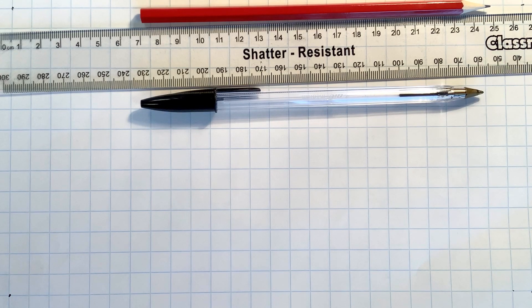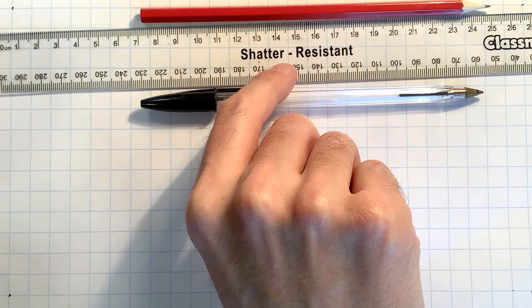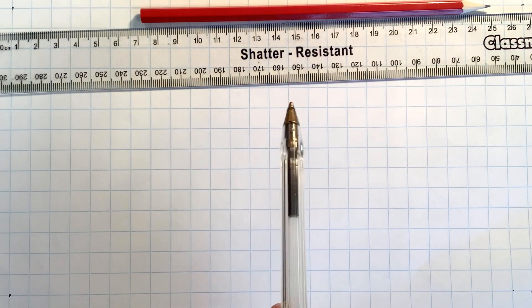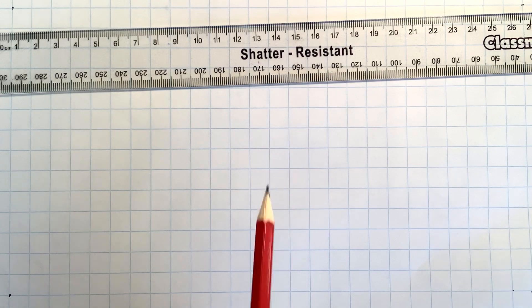In order to do this you're going to need a pencil, a 30 centimeter ruler and a pen. The general rule is going to be if we're writing words we use the pen, if we're drawing we use the pencil.